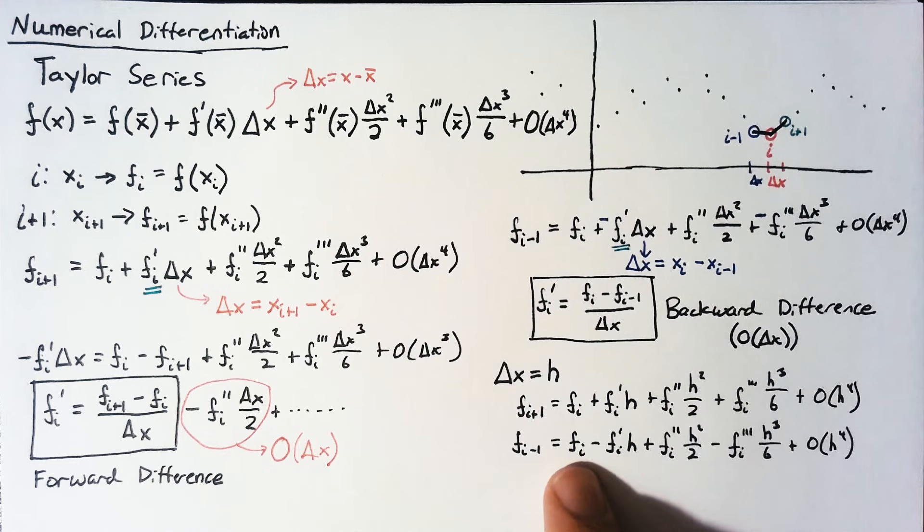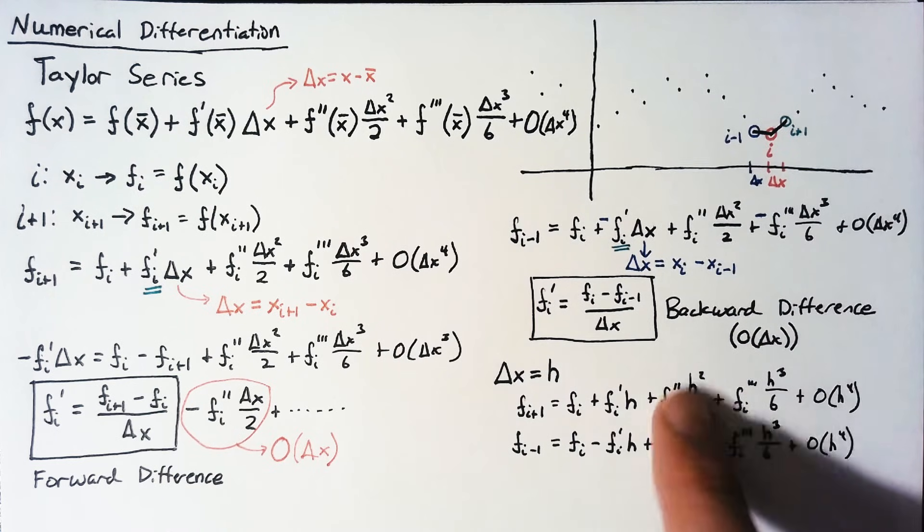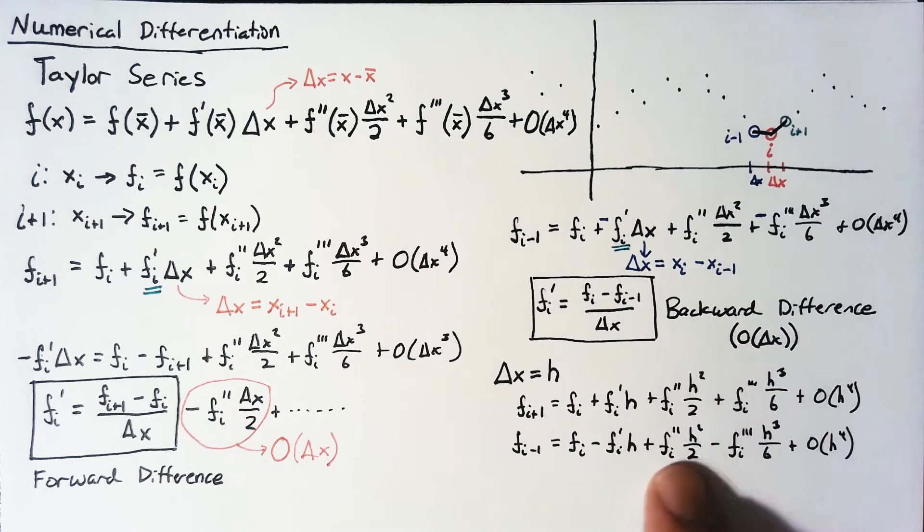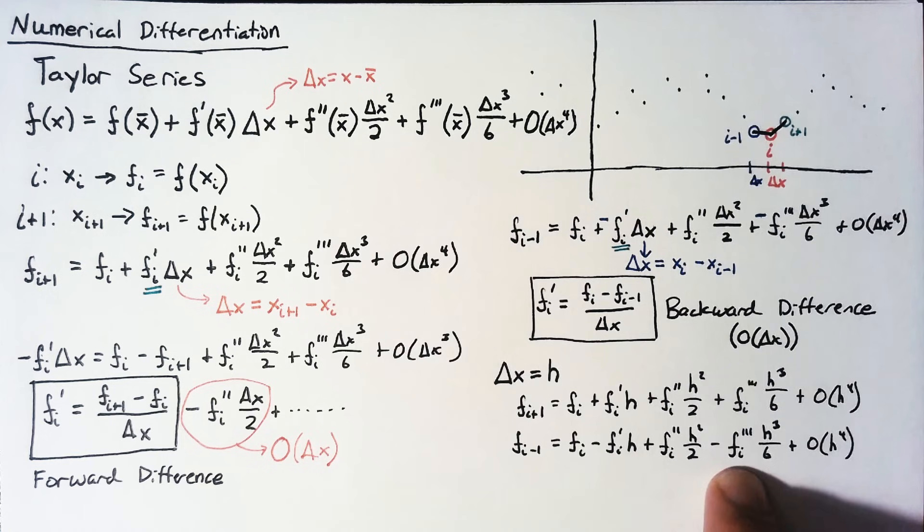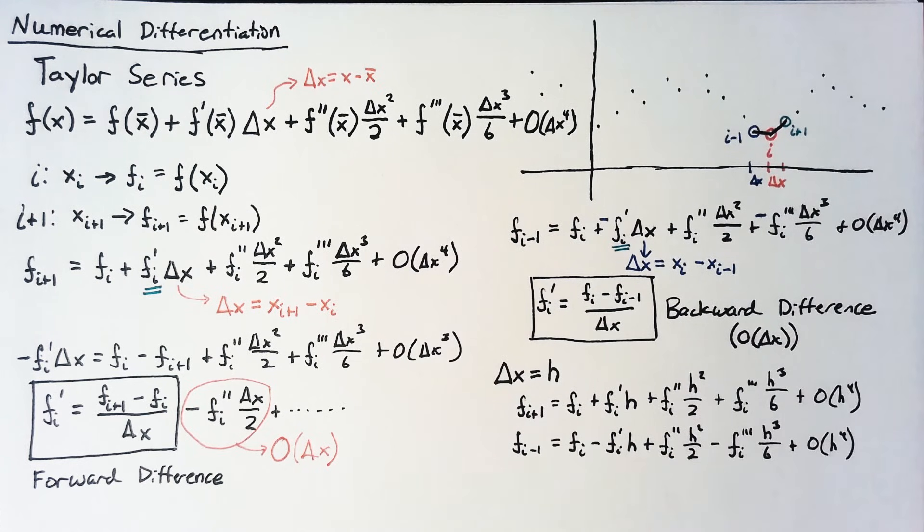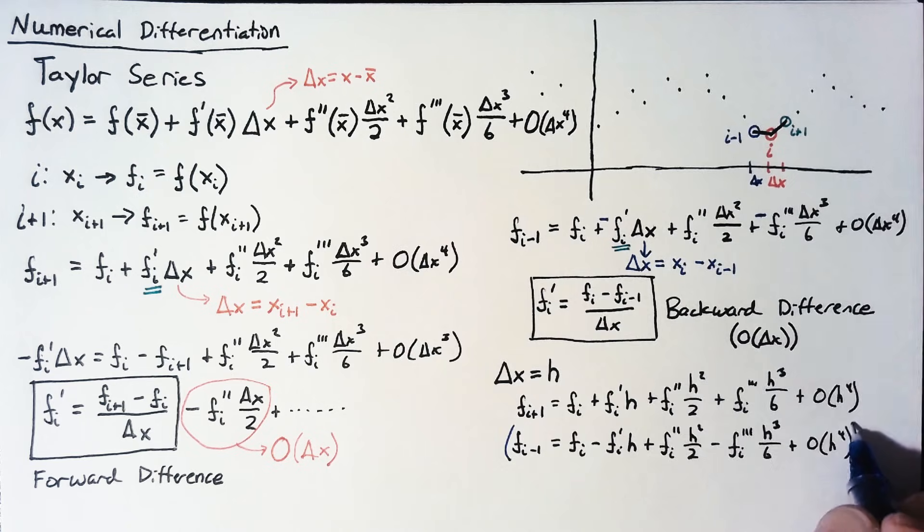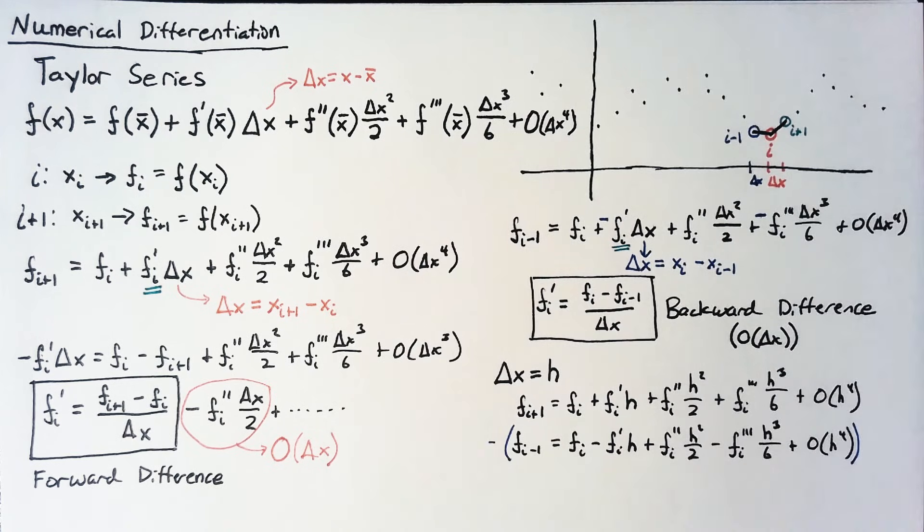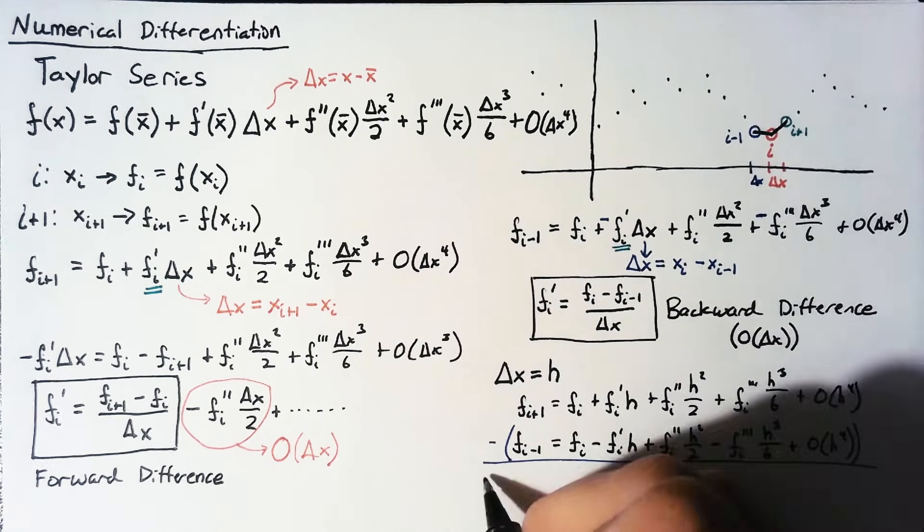So, now that we have these two equations, what we're going to do is, again, solve for this fi prime. But remember that our goal is to eliminate the fi double prime term because that has our h squared. If we have that, maybe we leave behind some of this fi triple prime term, but we're eliminating a full order of h on our error. So, what does that actually look like? Well, this is actually pretty easy to solve. I'm going to subtract the second equation from the first equation.